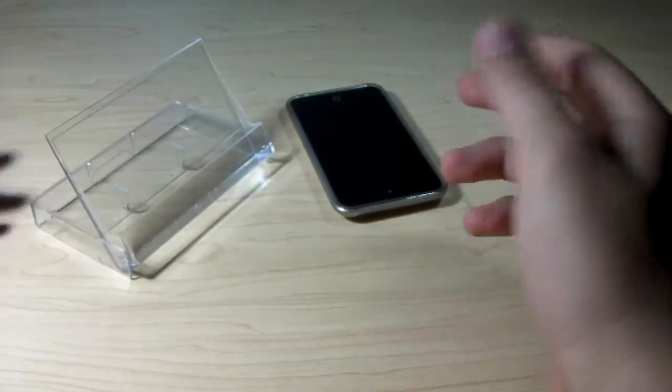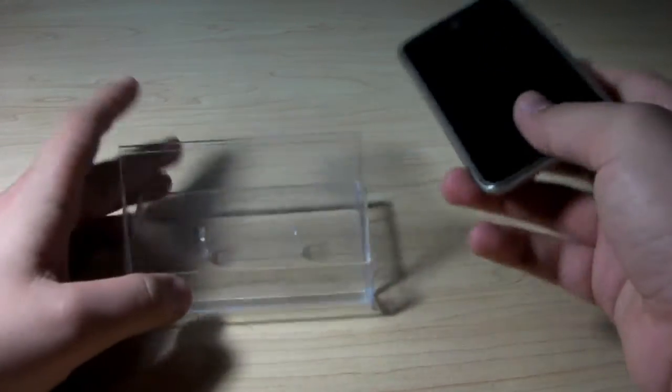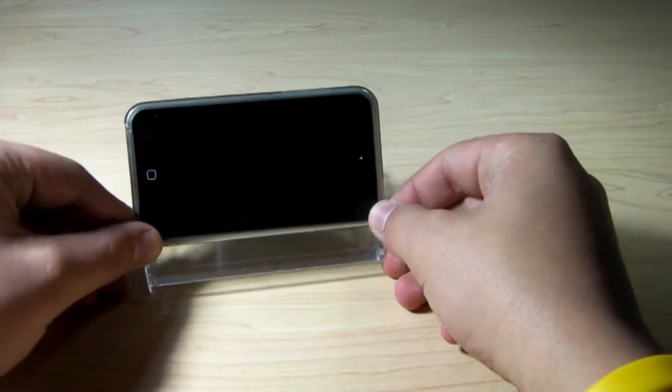Once that's out, you want to fold it up, and you have your stand right there. As you can see, it's plastic, it's see-through, looks fairly stylish. You can put your iPod Touch or iPhone in vertical mode.